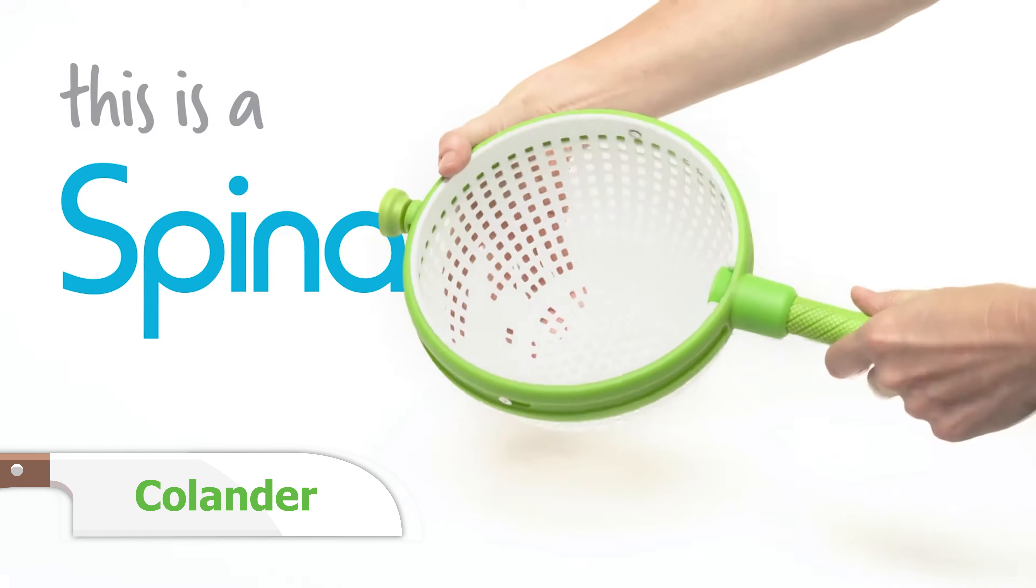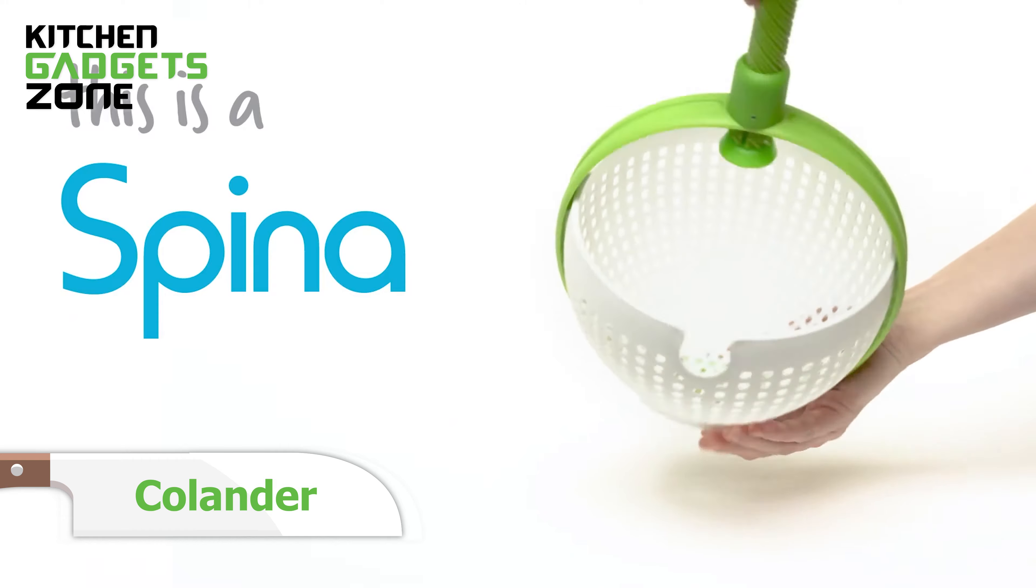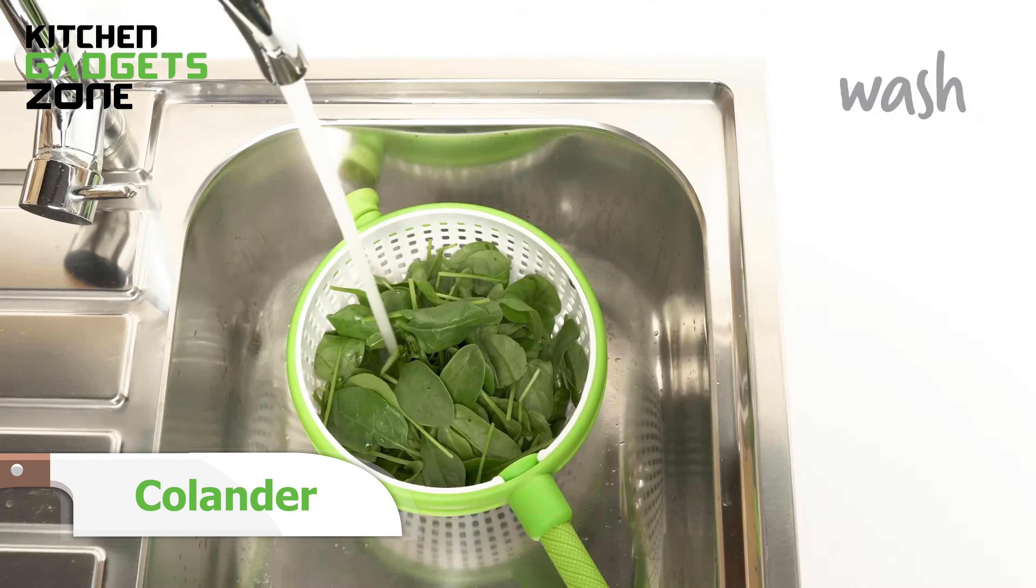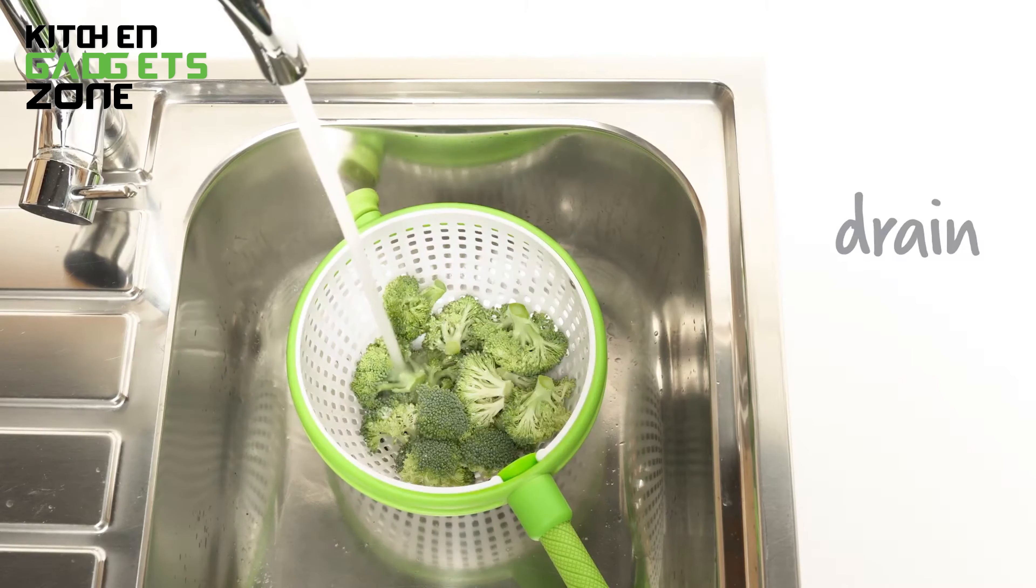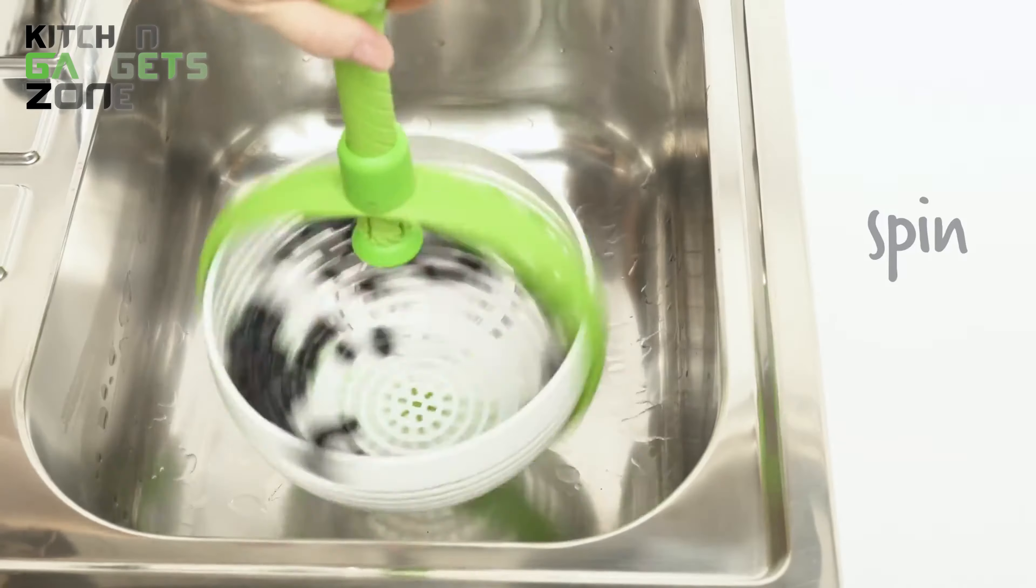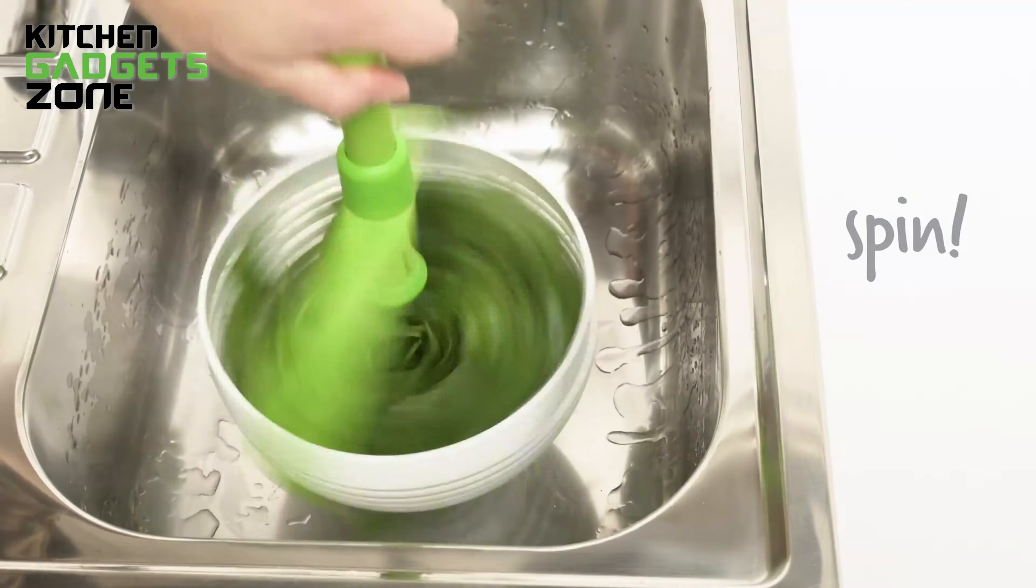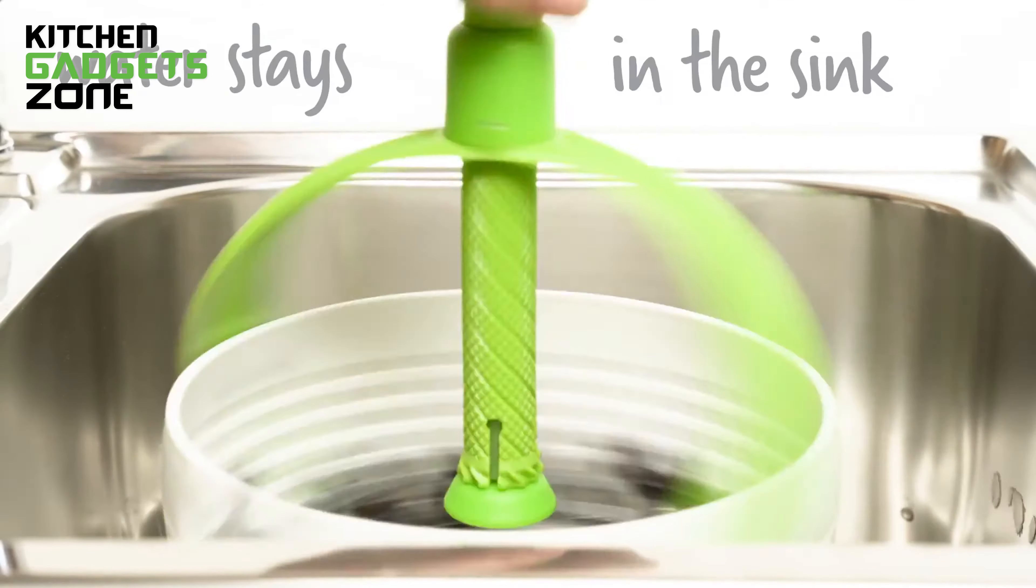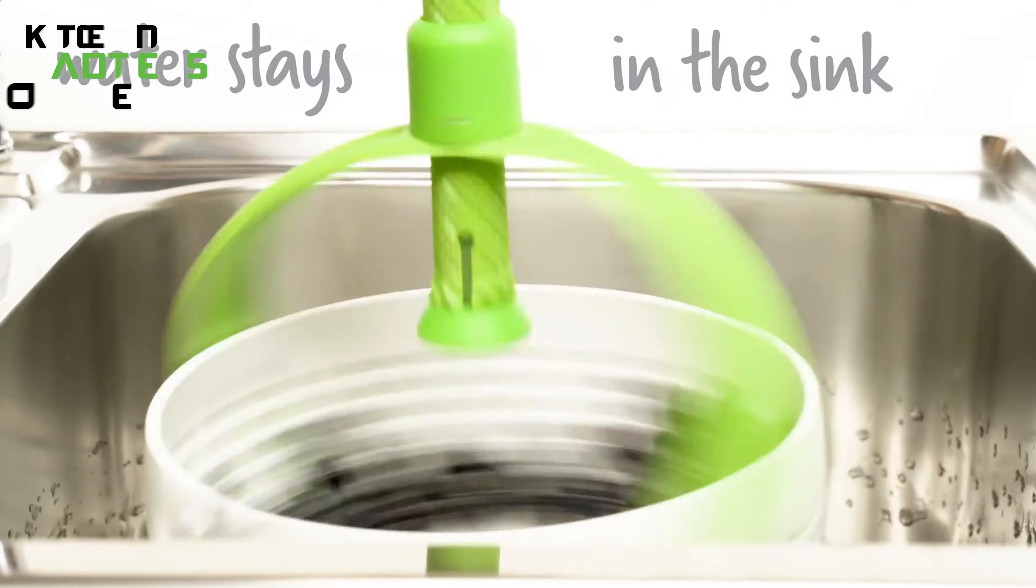Meet the Spina Salad Spinner and Colander. This versatile kitchen gadget does double duty, serving as both a colander for draining pasta and rinsing veggies and a spinner for quickly drying your greens. Simply twist the handle to transform the Spina into a spinner, and the pump-action rotation will have your salad leaves dry in seconds. Spina fits perfectly into the sink when you want to give it a spin, keeping the water mess contained.